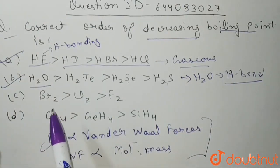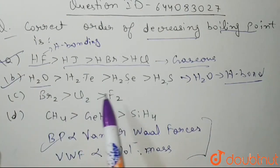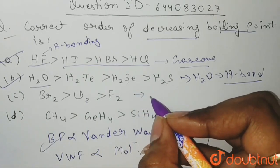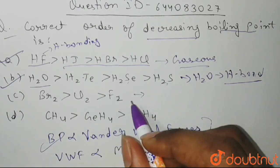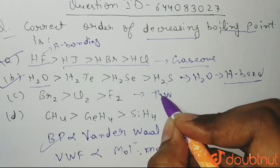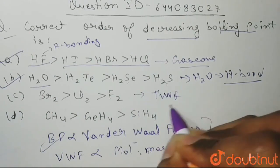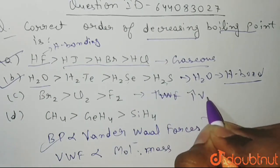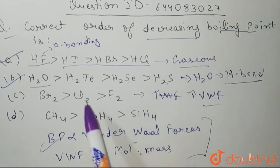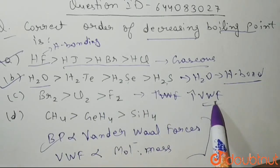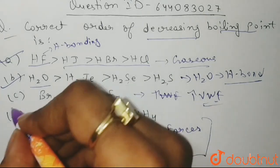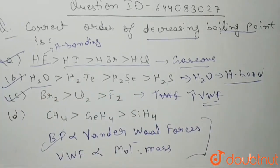Now, if you see Br₂, Cl₂, and F₂ — all are gaseous. So here we talk about dispersion forces, or Van der Waal forces. Greater the Van der Waal forces, greater the molecular mass, greater will be the Van der Waal forces and thus higher will be the boiling point. So option C is also correct.